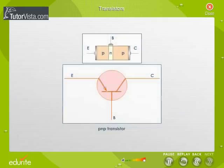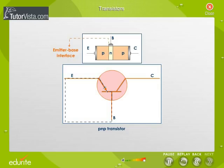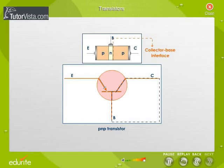The structure of the PNP transistor together with its circuit symbol is shown here. The outer regions are called the emitter and collector and the narrow central region is called the base. The configuration contains two junctions, namely the emitter base interface and the collector base interface.